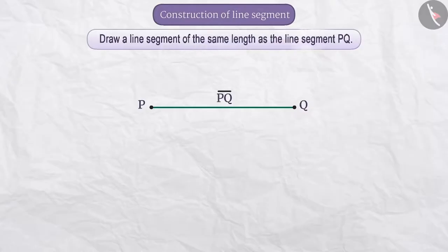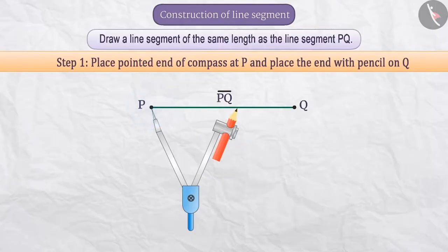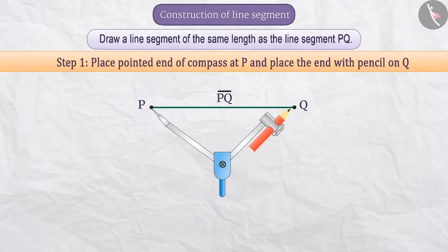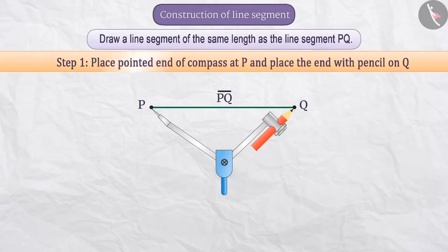Step 1: We will place the pointed end of the compass at point P and opening the compass, place the end with the pencil on Q. That is, we will take the measure equal to line segment PQ on the ends of the compass.